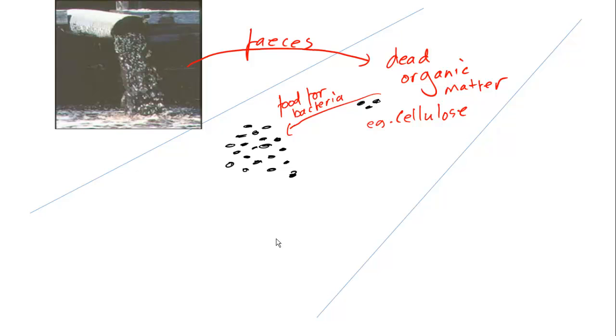Do the bacteria somehow throttle the fish, poison the fish, infect the fish? No, that's not what happens. What happens next is that these bacteria respire aerobically. And as they respire aerobically, they increase the biological oxygen demand, which I will abbreviate to BOD, the biological oxygen demand.